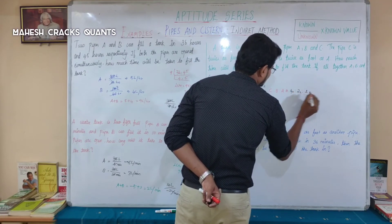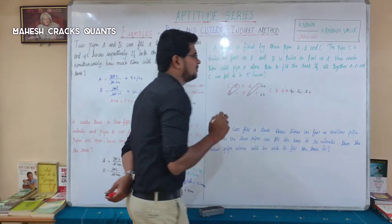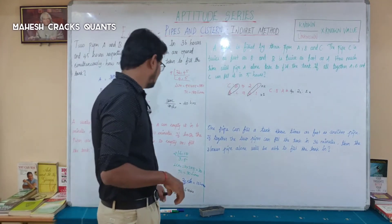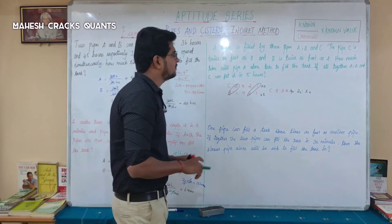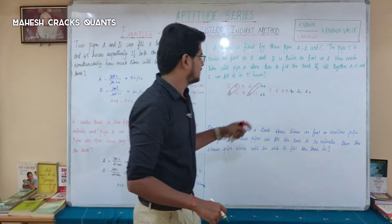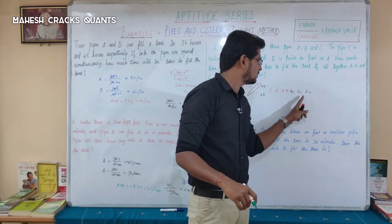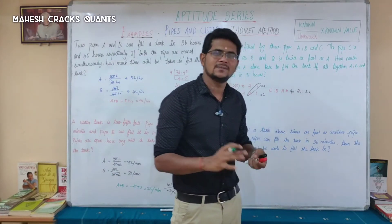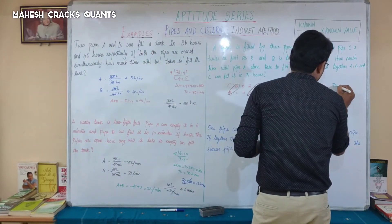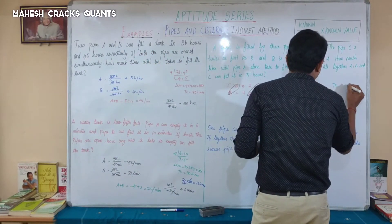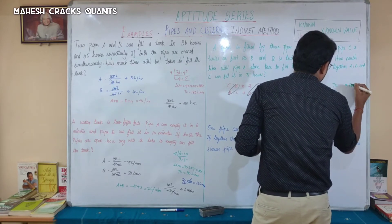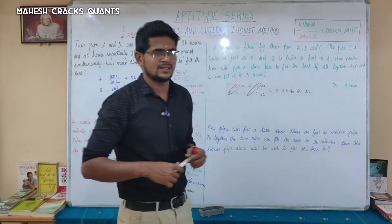So C = 4x, B = 2x, A = 1x. Together, A + B + C = 4x + 2x + 1x = 7x. All three together fill the tank in 5 hours, so 7x corresponds to 5 hours.